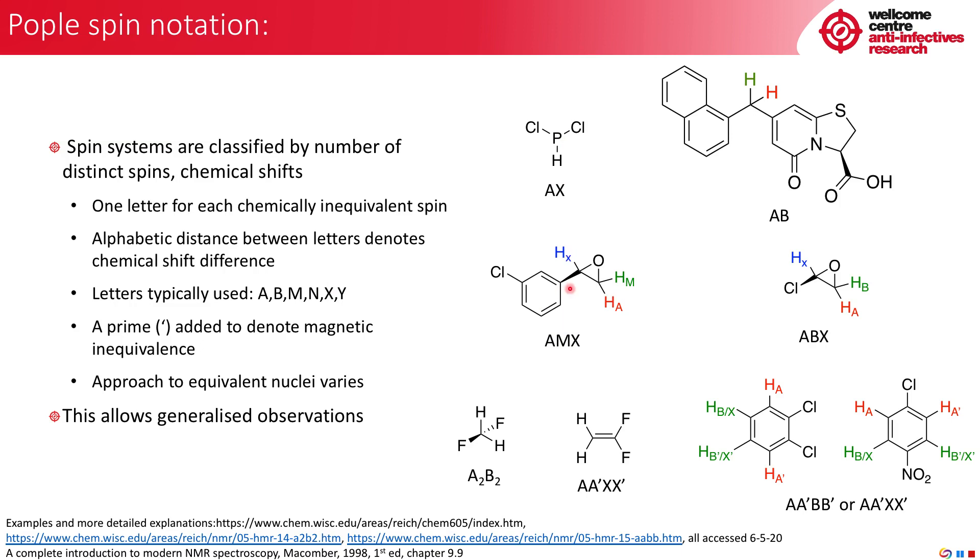If we then take away that phenol ring and just have a chloro substituent, in this case A is less influenced and A and B are closer in chemical shift. And this is an ABX system.